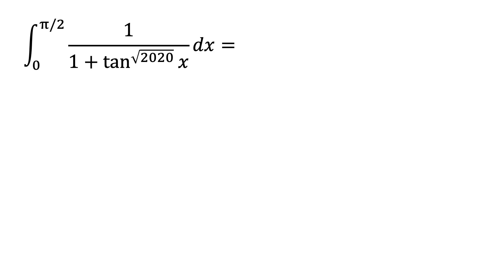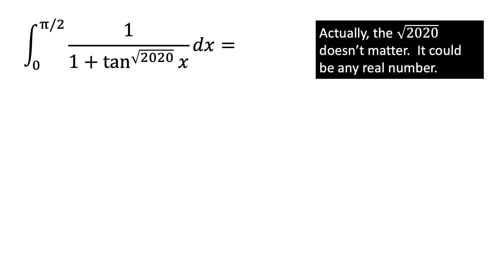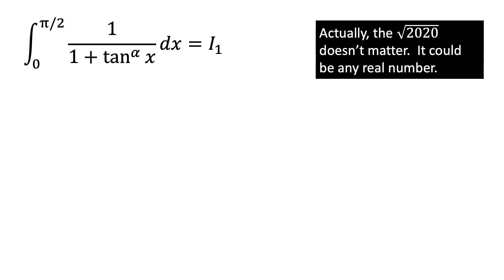Now, let's continue and look at the integral. Once again, we have the integral from 0 to pi over 2 of 1 over 1 plus tangent of x raised to the square root of 2020 power. Actually, it's going to turn out as we progress through this question that the square root of 2020 doesn't really matter. In fact, we could raise the tangent of x to the power of any real number. So for now, I will rewrite this as 1 over 1 plus tangent of x raised to the alpha power, and I will let the entire integral be equal to i1.